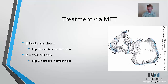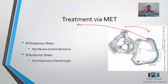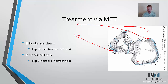If they have a posteriorly rotated innominate — rotated up and back — you need to rotate it anteriorly. The hip flexors that attach to the ASIS (anterior superior iliac spine) will pull it down and around back into anterior rotation. So if posteriorly rotated, use the hip flexors to pull into anterior rotation. If anteriorly rotated, use the hamstrings pulling up and back to pull you into posterior rotation.